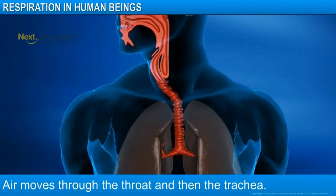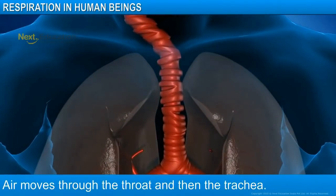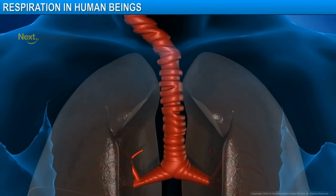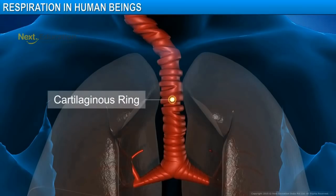Next, the air travels through the throat and then moves through a pipe called trachea. Trachea contains cartilaginous rings that ensure smooth flow of air into the lungs.